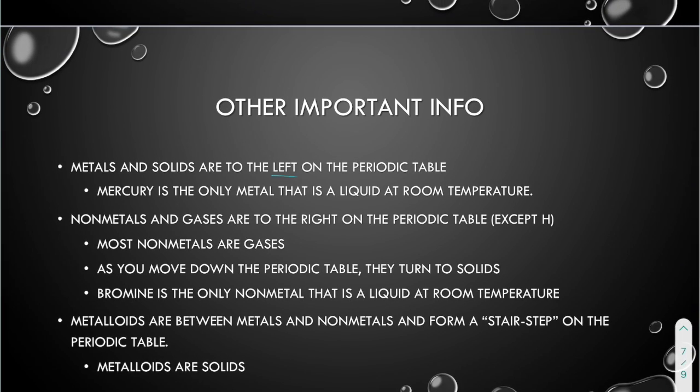Some other important info: metals and solids are on the left side of the periodic table. Fun fact, mercury is the only metal that is a liquid at room temperature. Non-metals and gases are to the right on the periodic table, except hydrogen is all the way on the left above group 1 because it has one valence electron. Most of the non-metals are gases. As you move down the periodic table though, they do turn to solids. So all the gases are going to be towards the top, and then the trend is that as you move down a group or a family, they start to turn to solids. Another fun fact, bromine is the only non-metal that is a liquid at room temperature. So bromine and mercury are the only two elements on the whole periodic table that are liquids at room temperature. Everything else is either a solid or a gas.